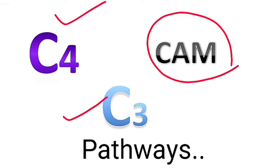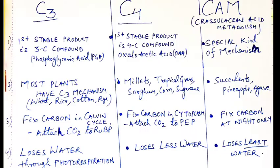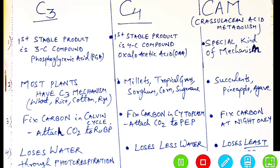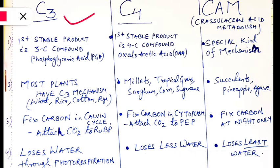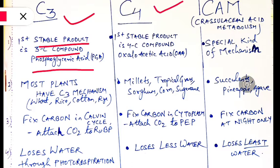By comparing each of them we will understand the differences between C3, C4, and CAM pathways. In C3, it is called C3 because the first stable product is a three-carbon compound — phosphoglyceric acid. In C4, the first stable product is a four-carbon compound — oxaloacetic acid — which is why it is called C4. This is important as exam questions often ask which is the first stable product of C3 or C4.